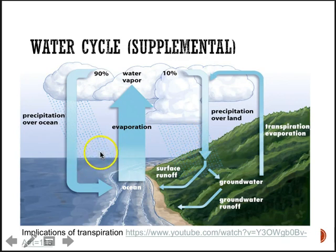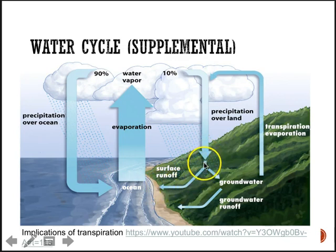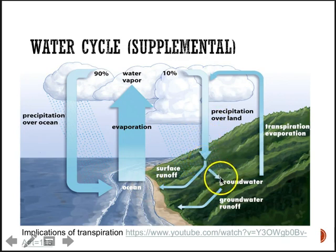That makes sense because there's a lot of moisture in the ocean and warm air rises and falls. Let's focus on what happens to precipitation when it lands on land. You've got a couple of choices: surface runoff, which means water runs along a stream or river along the surface down to the ocean. On the other hand, some water can percolate into the ground and become groundwater.